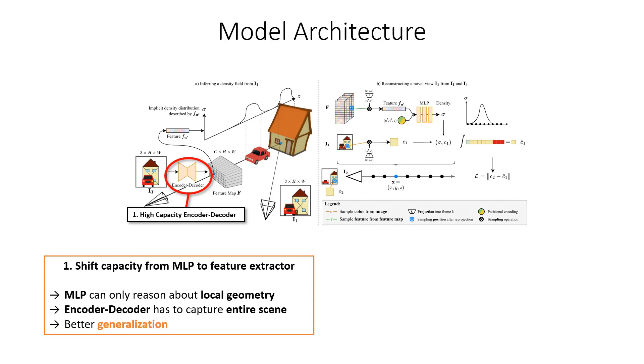In turn, the encoder-decoder network has to capture the entire scene geometry and produce very meaningful features. This change is beneficial for learning and generalization, as the encoder-decoder is much better at capturing the context of an entire image compared to an MLP, which would only receive local training signals.